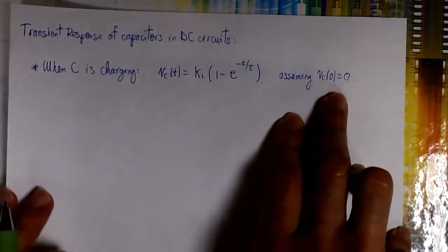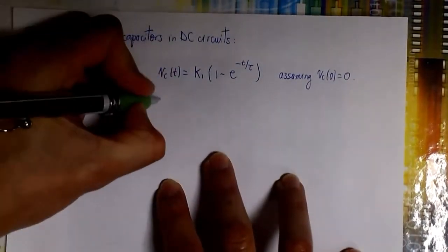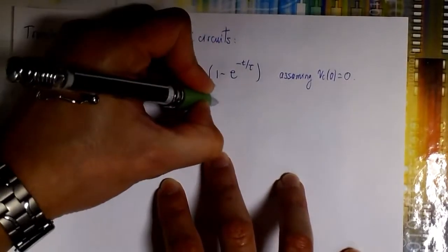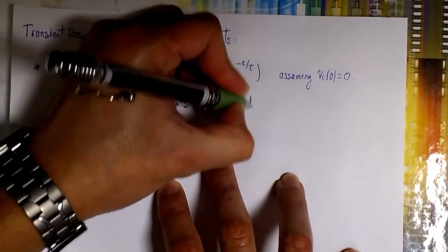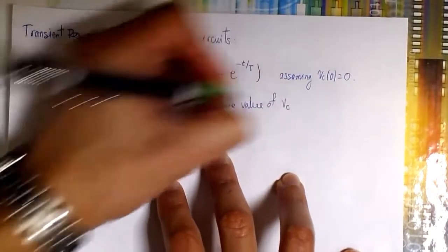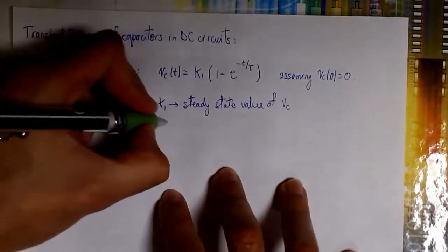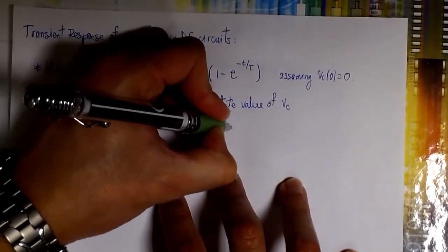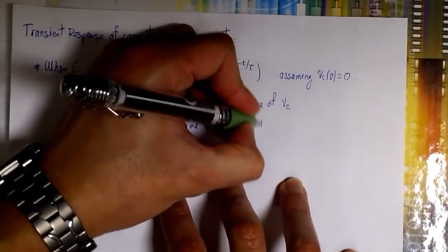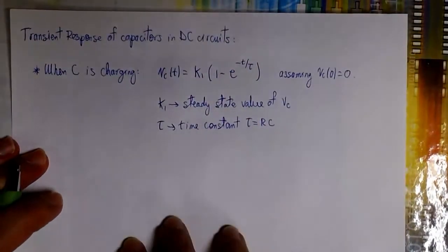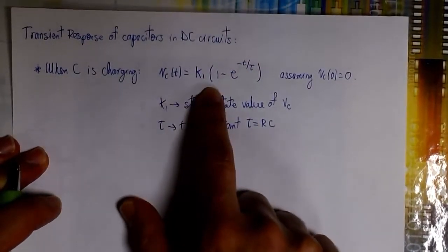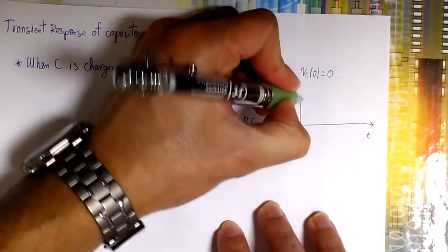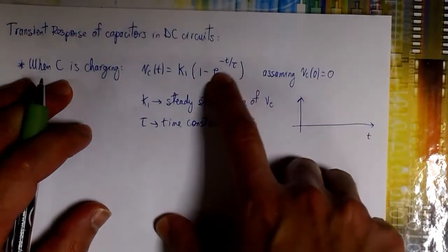For more details about this equation, you can check the lecture notes. K1 is the value of the steady-state voltage between the terminals of C — the voltage we get when the capacitor is fully charged and reaches a steady-state condition. The value of tau is the time constant, and we find it by multiplying R times C. So when C is charging, we basically need to find two values: tau, the time constant, and k1.